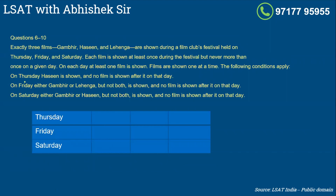Look at the other condition. On Thursday, Haseen is shown and no film is shown after it on that day. So I know that Haseen is definitely shown on Thursday - which slot, I don't know. But whenever you show Haseen, after that you cannot show any movie. So if Haseen is the first movie on Thursday, you cannot show any other movie on Thursday. On Friday, either Gambhir or Lehenga,